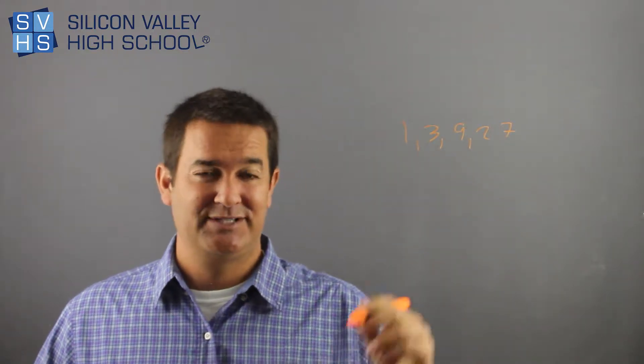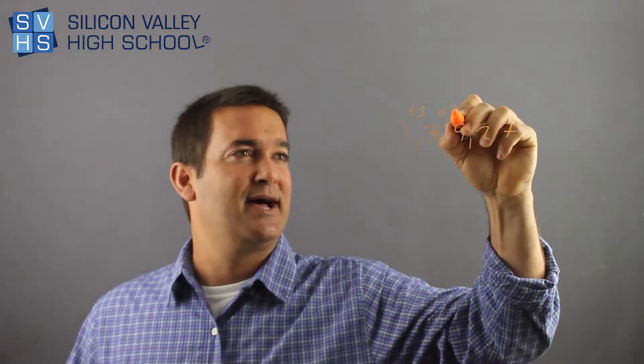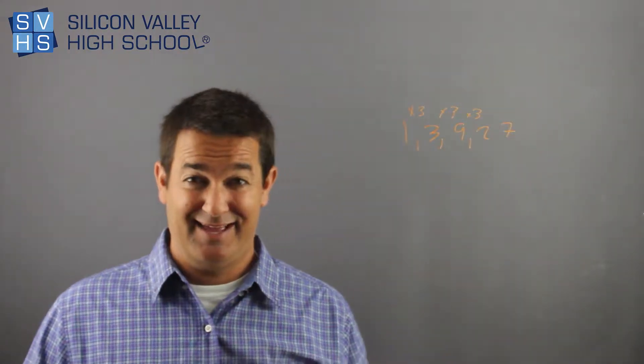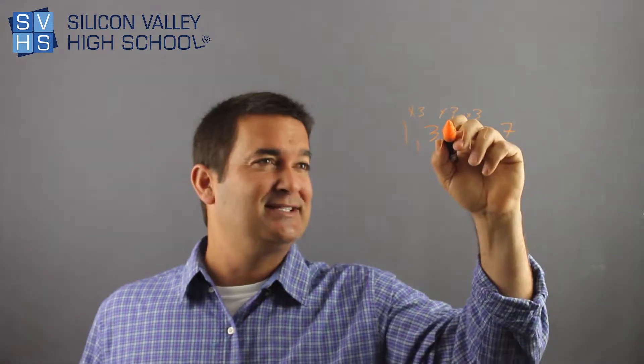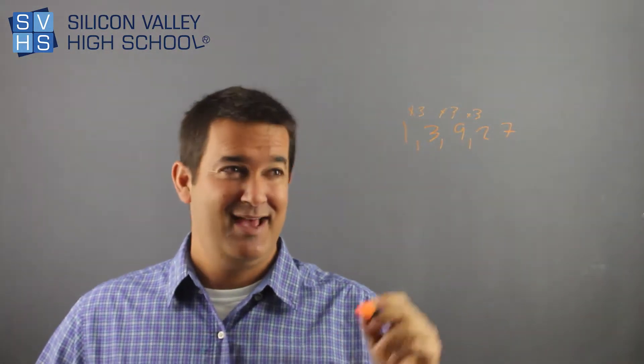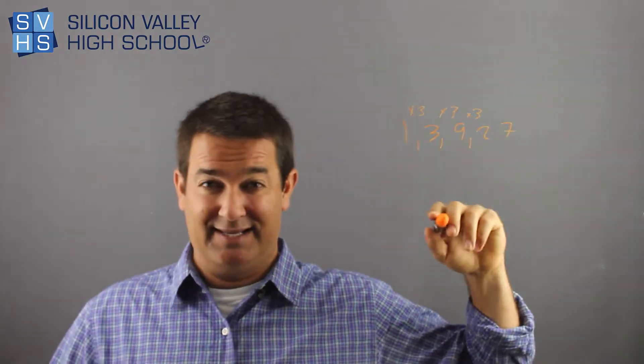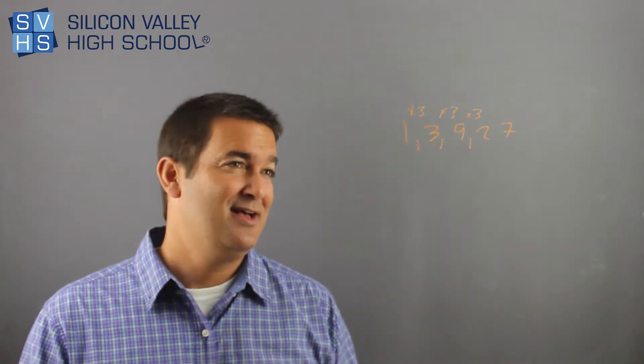This is definitely a geometric sequence and you're multiplying by 3 it looks like every time. 1 times 3 is 3, 3 times 3 is 9, sure enough this is definitely a geometric sequence. And this has to exactly continue on in this pattern to be a geometric sequence. It can't be like times 3, times 3, times 3 and then all of a sudden times 4 to get to the next guy. It has to be constant.